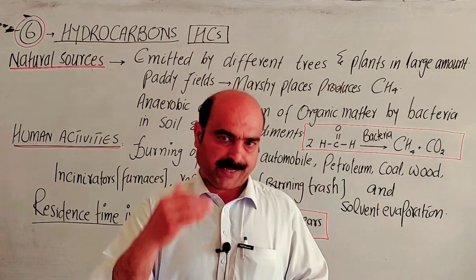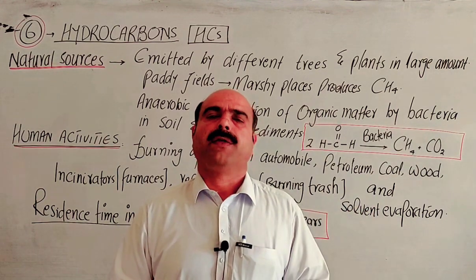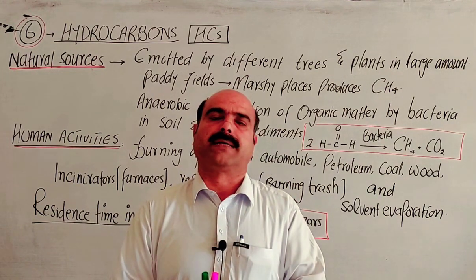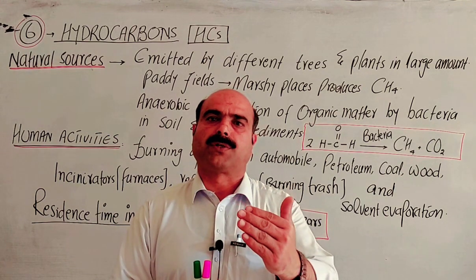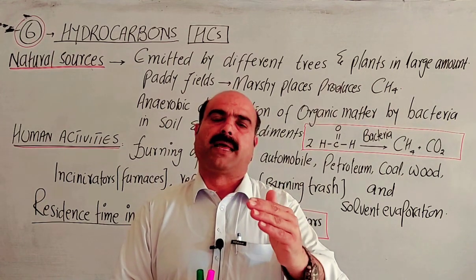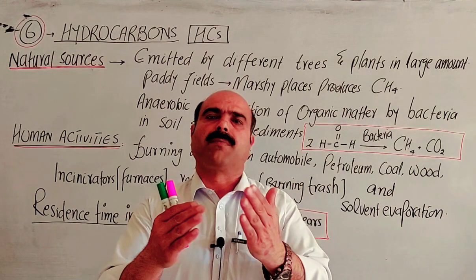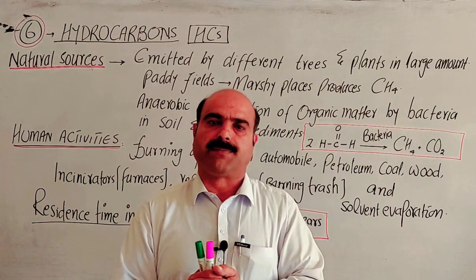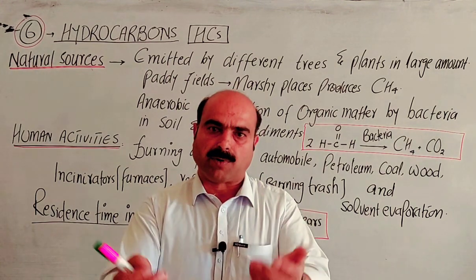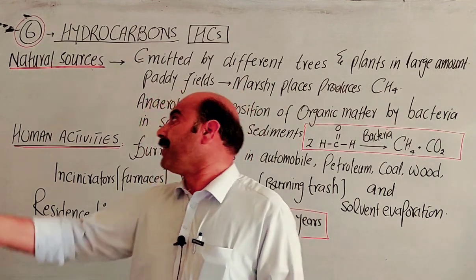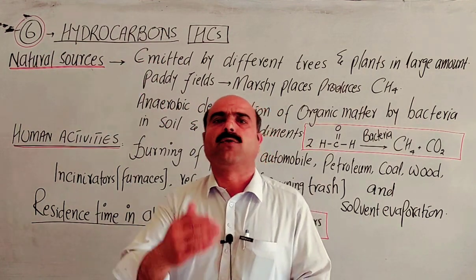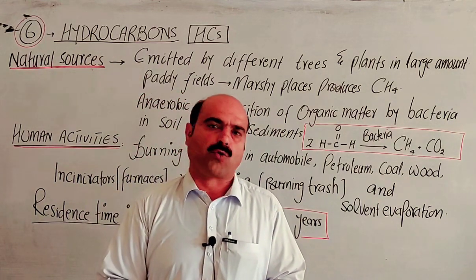Students, we already started discussion on primary pollutants. Among the primary pollutants we discussed carbon oxides — carbon monoxide — then sulfur dioxide, then nitric oxide and nitrogen dioxide. Fourth was volatile organic compounds as a primary pollutant. Fifth was ozone as a pollutant in the troposphere. Now the sixth primary pollutant type is hydrocarbons. Hydrocarbons are a pollutant in the lower atmosphere, the troposphere.